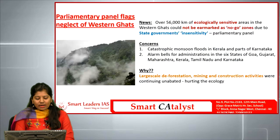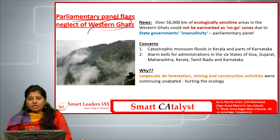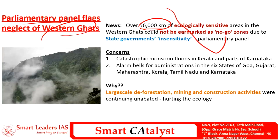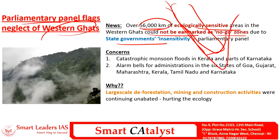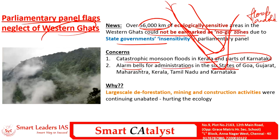The fourth article is parliamentary panel flags neglect of Western Ghats. Nearly 56,000 square kilometers of ecologically sensitive areas in the Western Ghats could not be notified as no-go zones, mainly due to state governments' insensitivity. This insensitivity towards the ecology of the Western Ghats is making six states in the region vulnerable to floods and landslides. The catastrophic monsoon floods in Kerala and parts of Karnataka are a major alarm bell for administration in the six Western Ghats states: Goa, Gujarat, Maharashtra, Kerala, Tamil Nadu, and Karnataka.